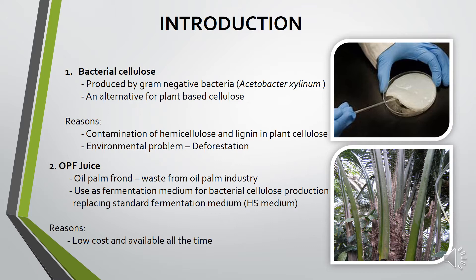What is OPF juice? It is a waste from the oil palm industry and is used as a fermentation medium for bacterial cellulose production, replacing the standard fermentation medium, which is Azotobacter xylinum. Why do we need to replace the fermentation medium? Because Azotobacter xylinum is very high in cost. When we replace the carbon sources with another type of waste, the cost will be lower and the sources are available all the time.